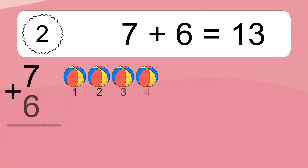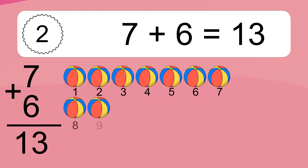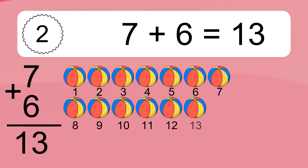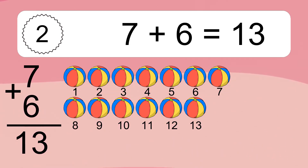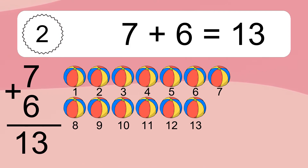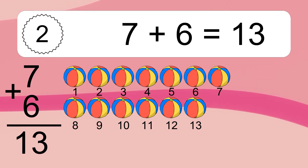7 plus 6 equals what? 7 plus 6 equals 13. Let's count it! 1, 2, 3, 4, 5, 6, 7, 8, 9, 10, 11, 12, 13.